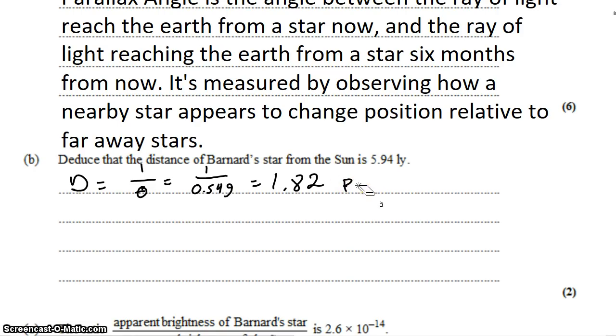But the question didn't say... Well, the question wants us to show that the distance is 5.49 light years, so we simply need to convert parsecs to light years. The relative factor between the two is 3.26 light years per parsec, for a total of 5.94 light years.